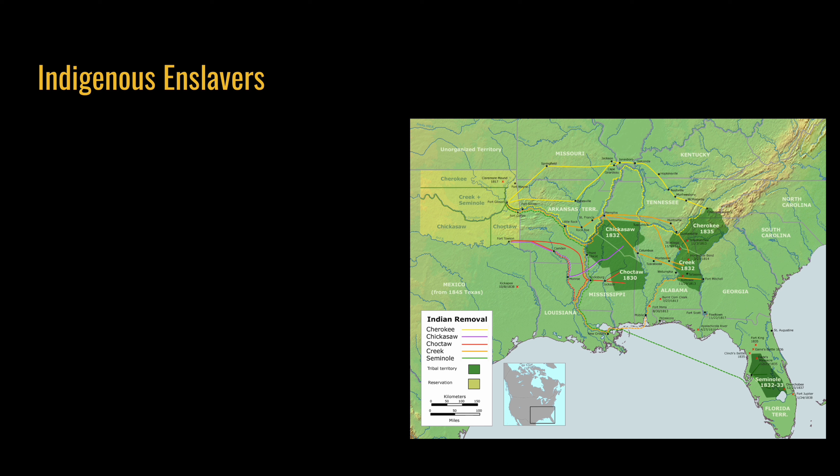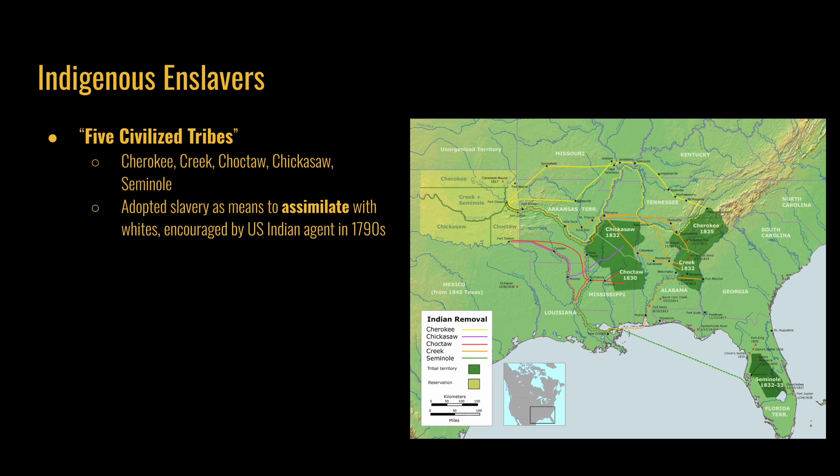Some of the largest Indigenous enslavers were what were called the Five Civilized Tribes, which included the Cherokee, Creek, Choctaw, Chickasaw, and Seminole. This name was given to them by white Americans because of their efforts at assimilation into the rest of white American society. In order to continue that assimilation process, adopting slavery as a means of labor was utilized, and it was first encouraged by the U.S. Indian agent in the 1790s.